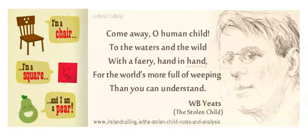Here we have examples of both approximate rhyme and exact rhyme. Chair, square, and pair sound the same but none of those words are spelled the same. That would be an example of approximate or slant rhyme.